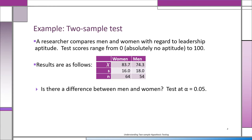In this example, we're going to look at a comparison of men and women and how well they do in terms of leadership aptitude. As you can see from the example, the mean for women was 83.7, this is on a scale that goes from zero to 100. The mean for the men was 74.3.